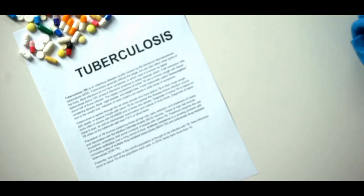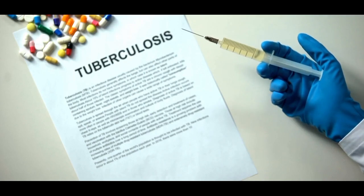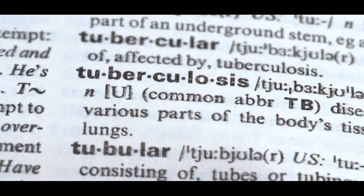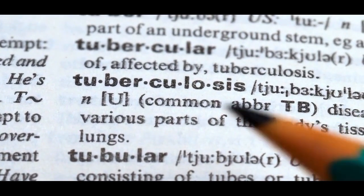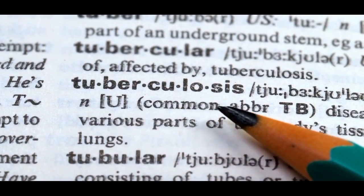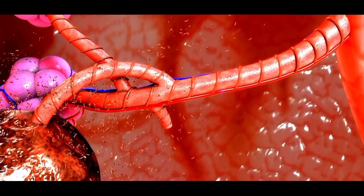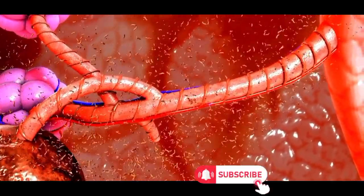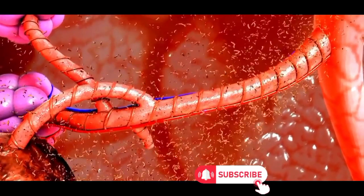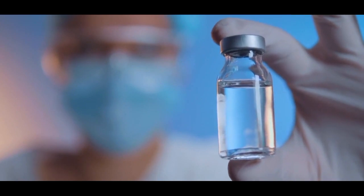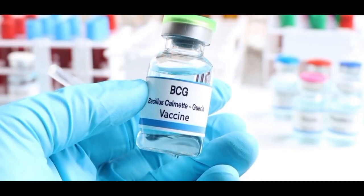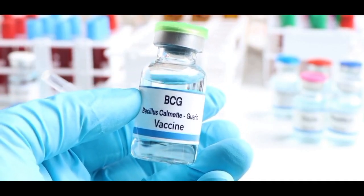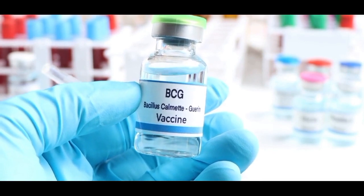Historical background. Tuberculosis, or TB, is not a new adversary — its history is interwoven with that of humanity. Historical records suggest that tuberculosis has afflicted humans for thousands of years. Often referred to as the White Plague in the 19th and early 20th centuries, TB was a leading cause of death. The quest for understanding and combating the disease led to significant breakthroughs, including the discovery of the Bacillus Calmette-Guérin, BCG, vaccine in the early 20th century.